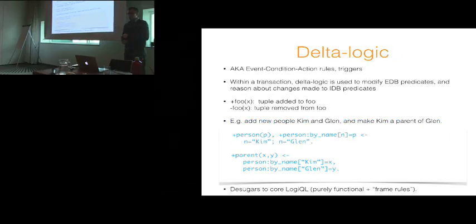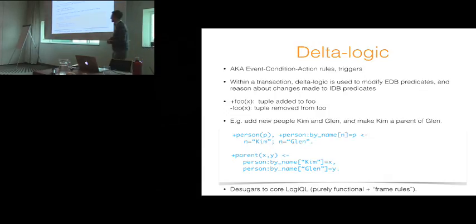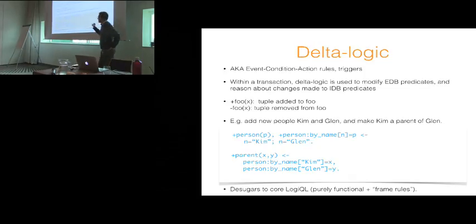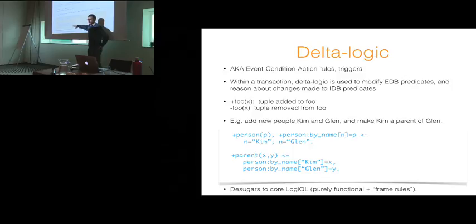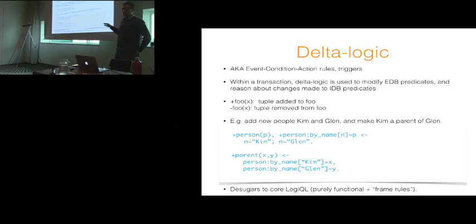We also have delta logic, which is used to modify EDB predicates and transactions. You can think of these as similar to event-condition-action rules or triggers in traditional databases. The syntax sugar we use is just to put a plus or minus in front of a predicate: plus foo means something is being inserted, minus foo means something is being removed. For example, if we want to add two new people to our little database, Kim and Glenn, we write a rule that adds them to the person-by-name constructor and also to the person entity type. This is purely syntactic sugar — underneath the hood it desugars to core logical, so it's actually purely functional.